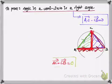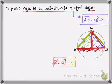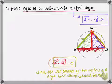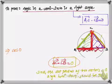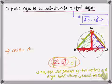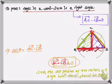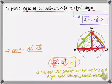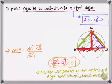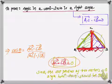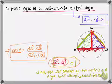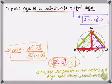So the dot product of vectors AC and CB equals zero, which means the angle between them is 90 degrees. We can verify this using the formula: cos θ = (AC · CB) / (|AC| × |CB|), where θ is the angle between vectors AC and CB.